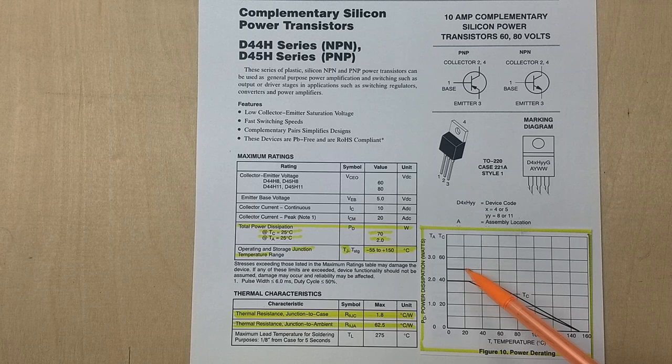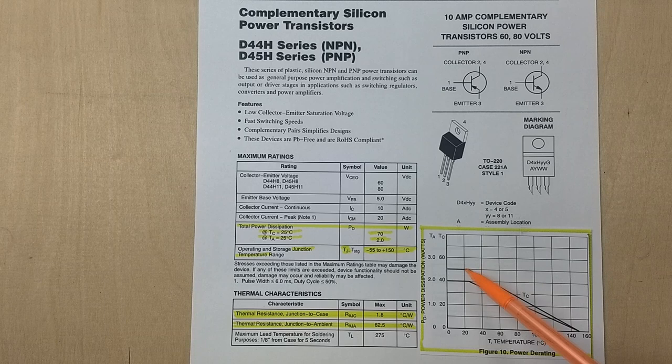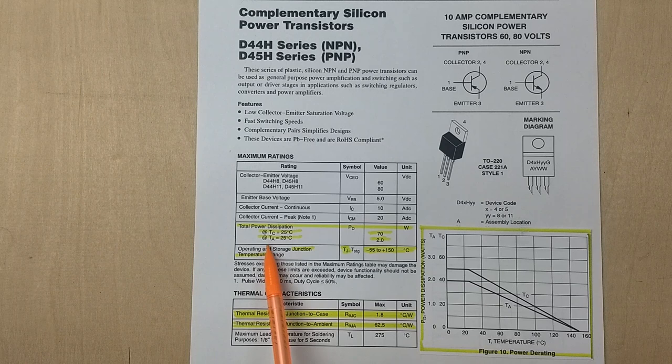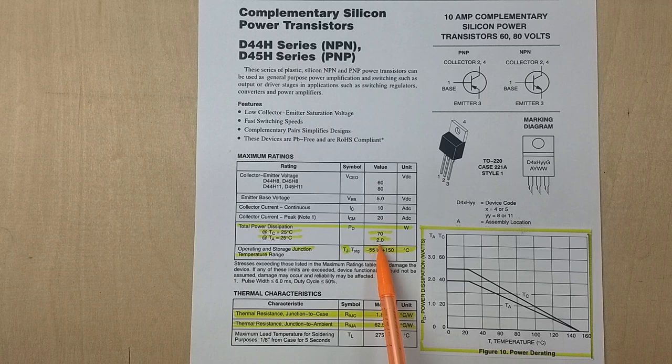And it's also telling us that I'll notice that that rating is at a case temperature of 25 degrees C. So this 50 watts here is at 25 degrees C case temperature. Then it's saying at an ambient temperature it's good for 2 watts without a heat sink. And that's this bottom curve here.